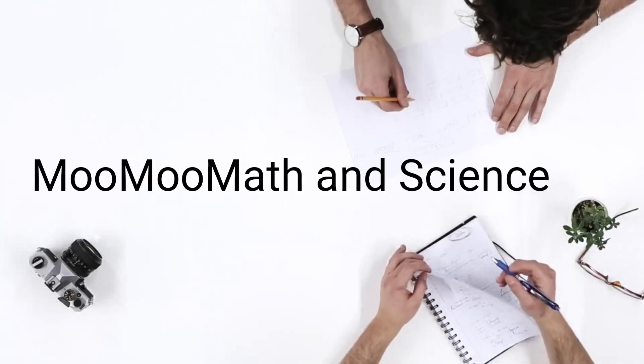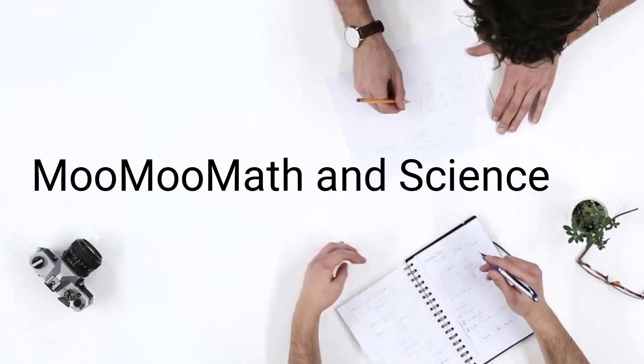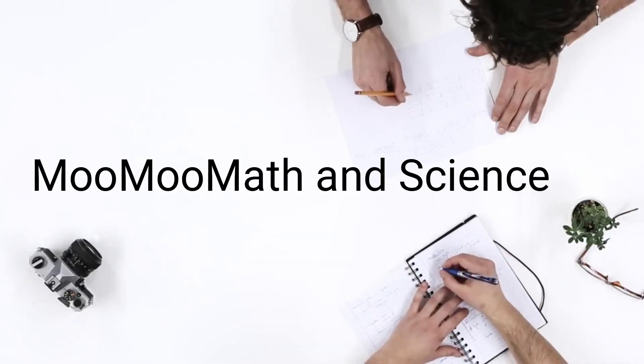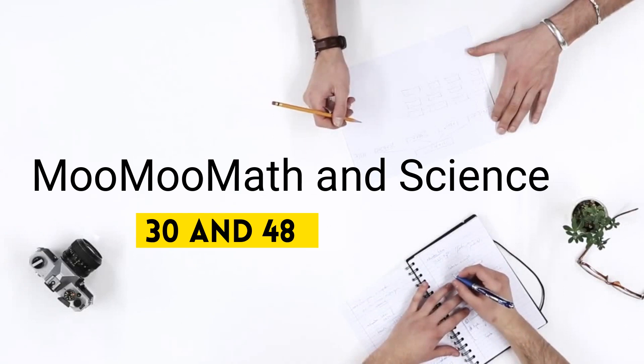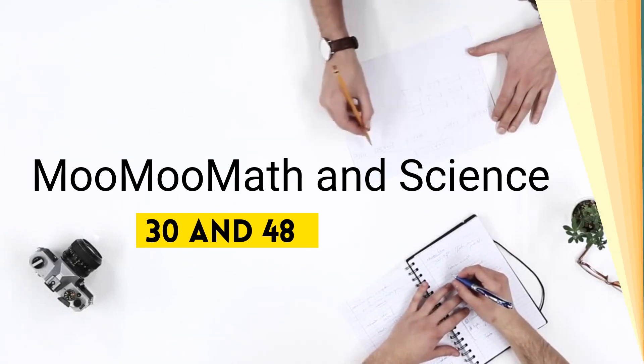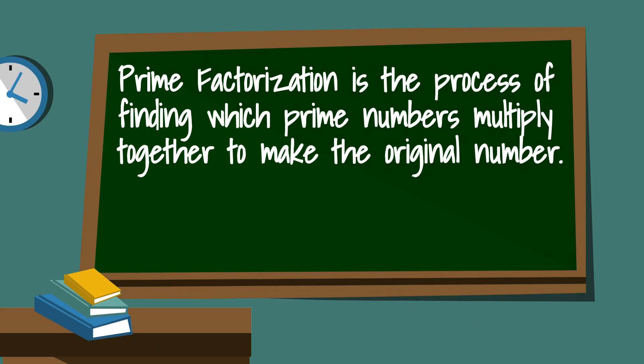Welcome to Moomoo Math & Science and the prime factorization of the numbers 30 and 48. Prime factorization is the process of finding which prime numbers multiply together to make the original number. Let's get started with 30 and I'll use a factor tree.